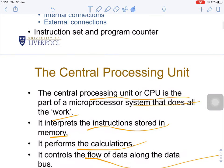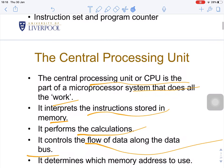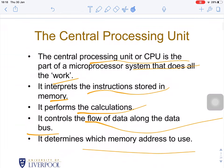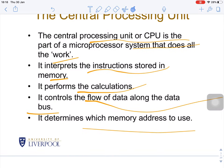We are also going to describe the instruction set and program content. So firstly, what is the central processing unit? The CPU is a part of the microprocessor system that does all the work. It interprets the instructions stored in memory and performs calculations. It controls the flow of data along the data bus, and it determines which memory address to use.